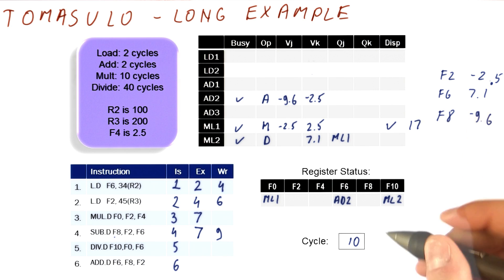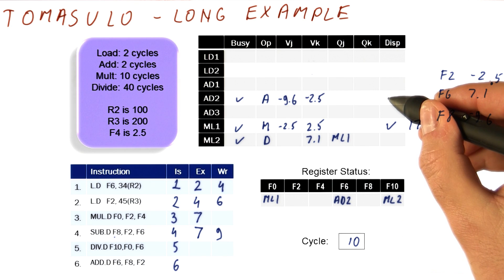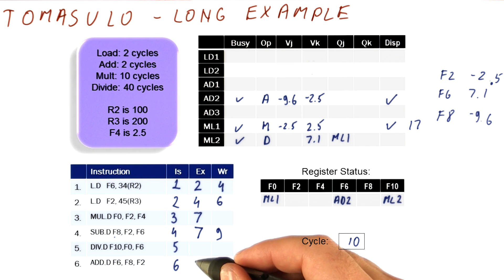In the next cycle, in cycle 10, this instruction will be able to dispatch. This is our add, and it's going to execute in cycles 10 and 11.